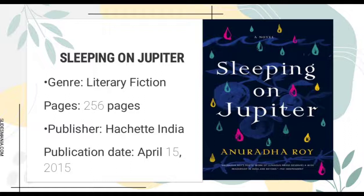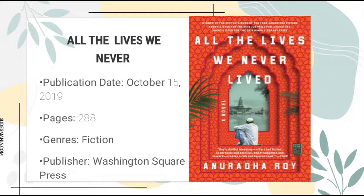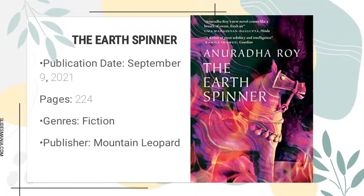It also exposes the endless treacherous hypocrisies of Indian society. The fourth novel is entitled All the Lives We Never Lived, publication date October 15, 2019, pages 288, genre fiction, publisher Washington Square. It talks about a poignant and sweeping novel set in India during World War II, and its main protagonist is a male named Mishkin. The book explores themes of childhood trauma, the pain of separation, loneliness, and guilt. The last novel is entitled The Earthspinner, publication date September 9, 2021, pages 224, genre fiction, publisher Mountain Leopard.